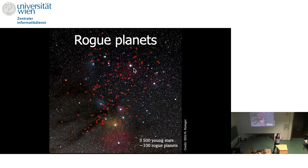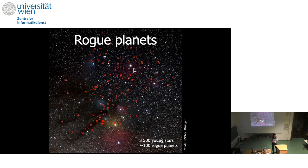Regarding life on rogue planets: on the rogue planet itself, I would say no. On Earth we have conditions for life because we have our sun that warms us up, and for that we can have liquid water. These planets are alone and isolated — no one is warming them up. So in principle, they are really cool and not somewhere we would like to go.